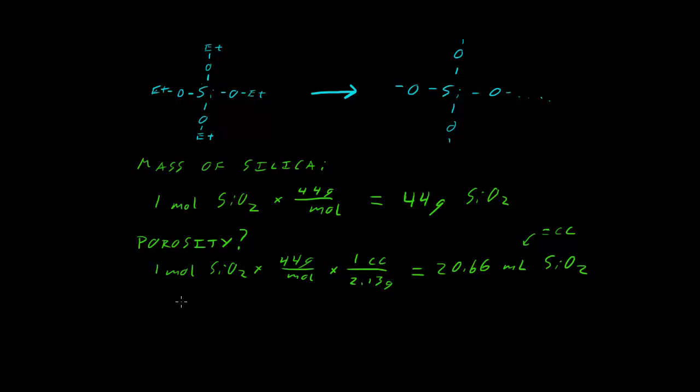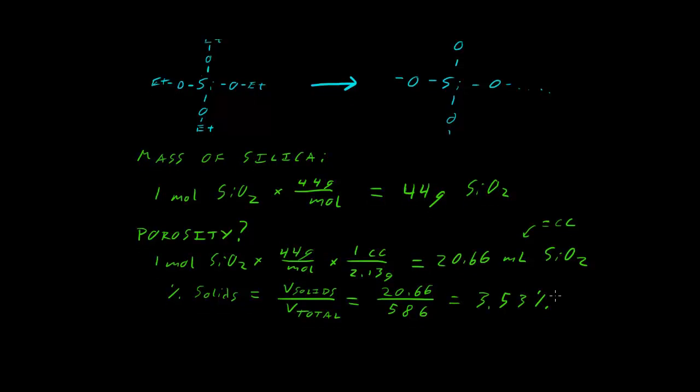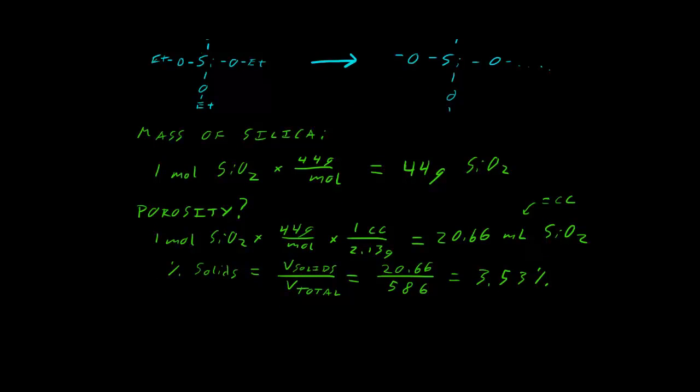That's the volume that the SiO2 occupies. Our percent solids is going to be the volume of the solids, in this case that's only SiO2, divided by the total volume of the gel. 20.66 divided by 586 gives you 3.53% solids. Of the total gel, only about 3.5% of it is actually solid, which is not very much. Let's convert that into porosity, percent porosity, which is 100% minus 3.5%, gives us 96.47% porosity. That's really high. About 96.5% of this is just open space, just pore volume.